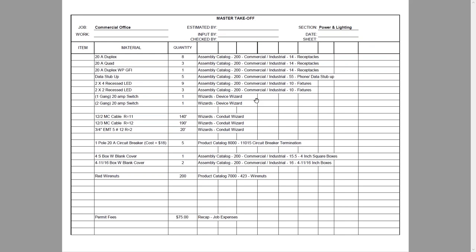The next screenshot is a material takeoff form. If you don't have it printed out or in front of you, go ahead and pause this video. This is similar to a material takeoff form provided by Red Rhino. At the top, the name of the form is 'Master Takeoff.' The job name is 'Commercial Office,' and on the right the section is written as 'Power and Lighting.' The materials go in the material column and quantities in the quantity section.